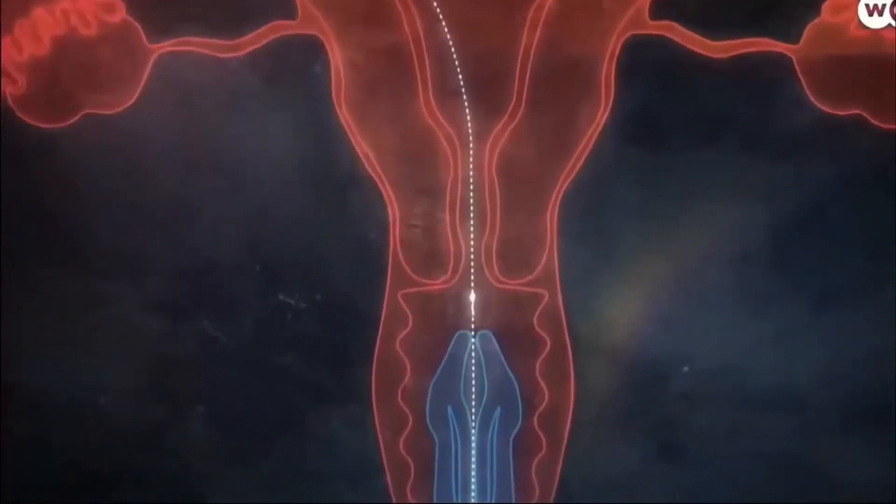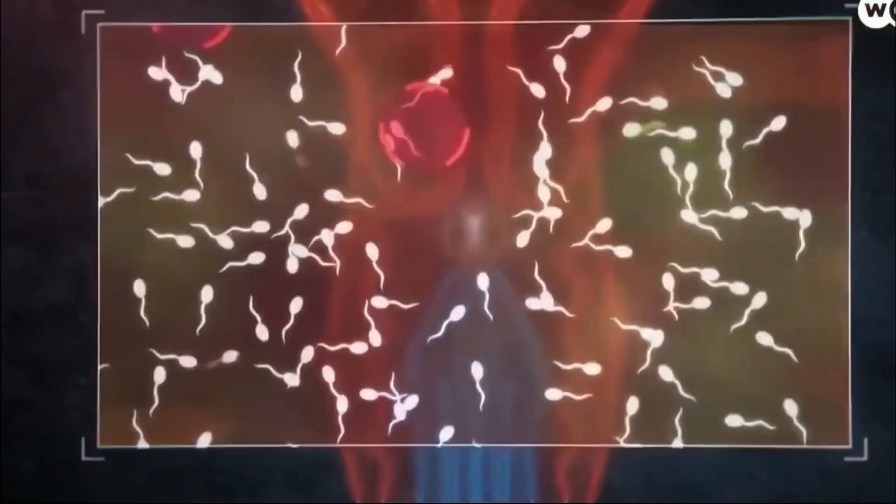Once inside the cervix, the sperm continue swimming toward the uterus. Millions will die trying to make it through the mucus. Some sperm remain behind, caught in the folds of the cervix, but they may later continue the journey as a backup to the first group.